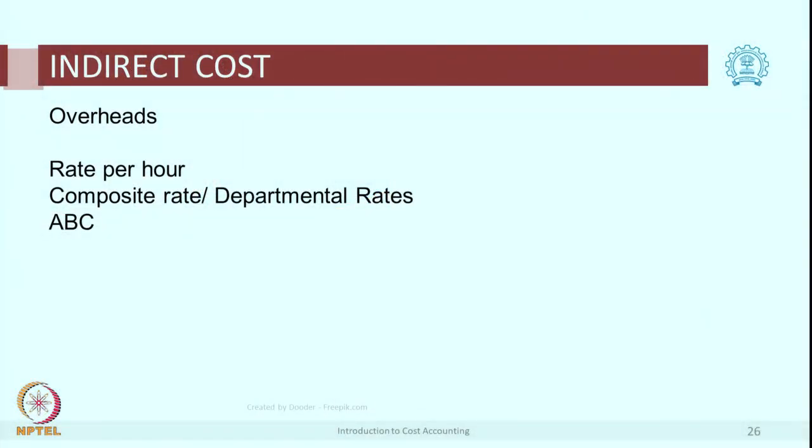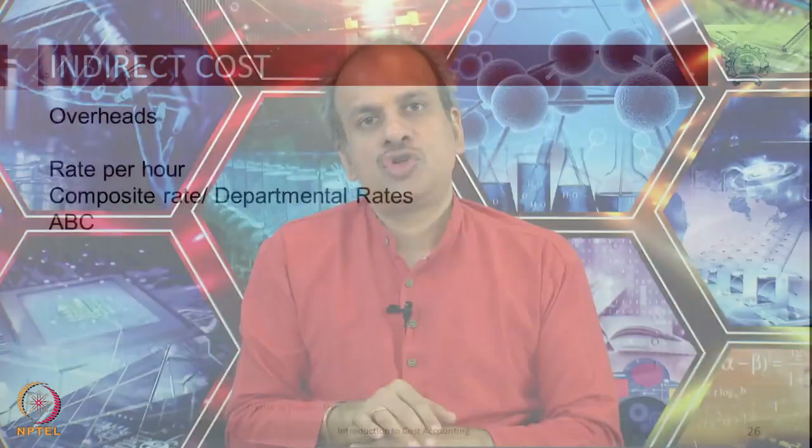We need to charge indirect costs too. Direct costs we can easily charge, but indirect costs cannot be charged directly. That is why normally a rate per unit is calculated, or a composite rate is calculated — technically called an absorption rate. We take the total of indirect costs and divide by number of hours to get a rate per hour. This is a very basic method; there are advanced methods like activity-based costing.